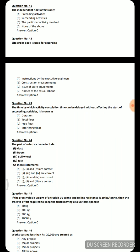First question: independent float effects — option A: only preceding activities, option B: succeeding activities, option C: the particular activity involved, option D: none of the above. The correct answer is the particular activity involved.